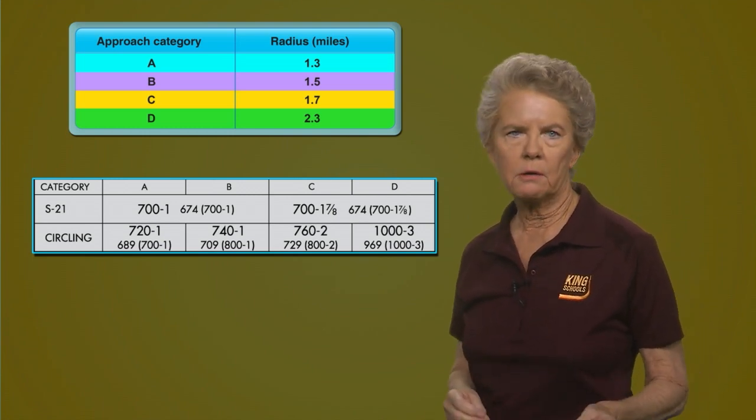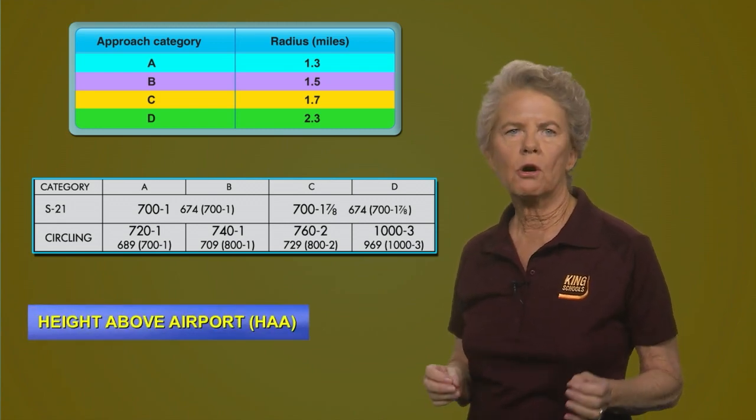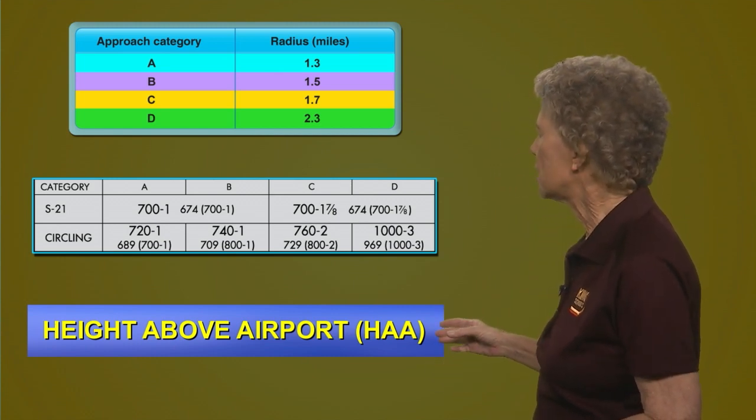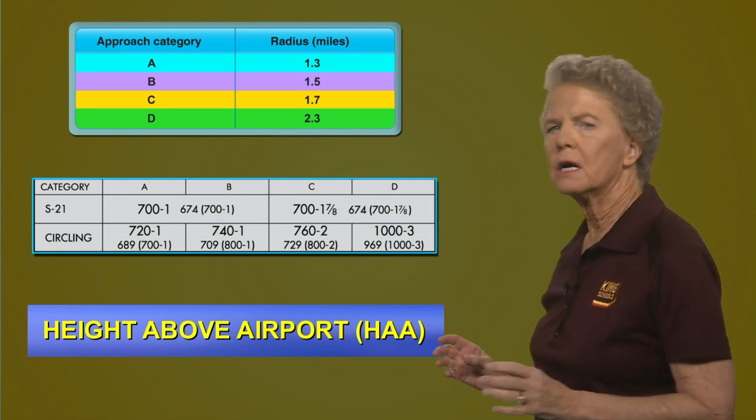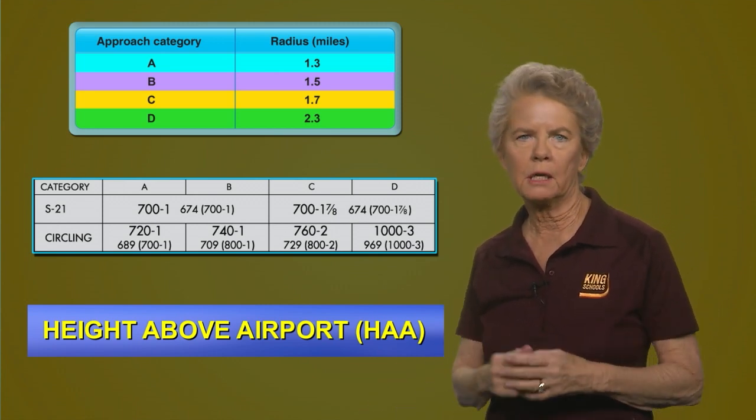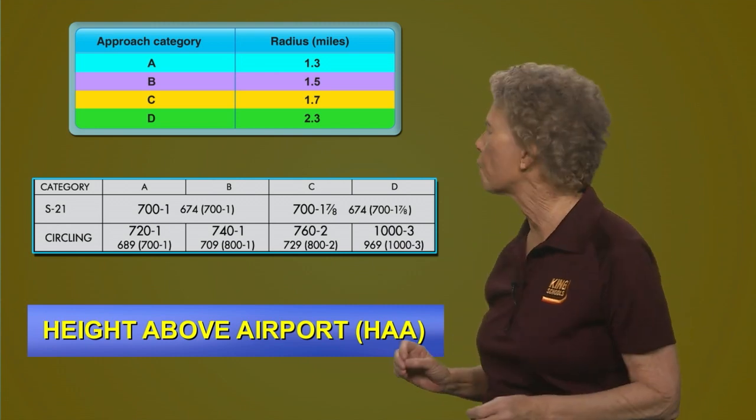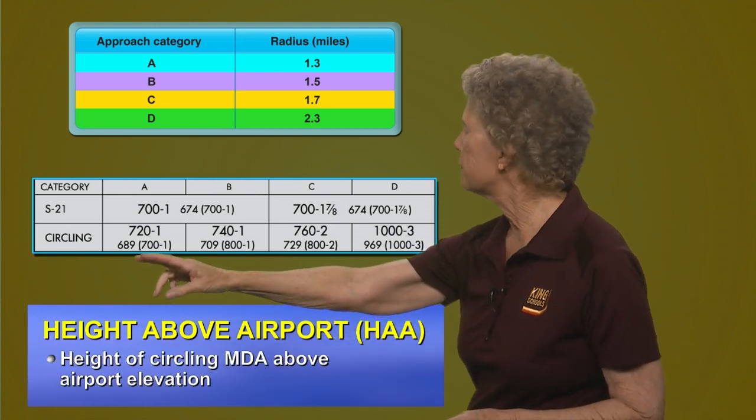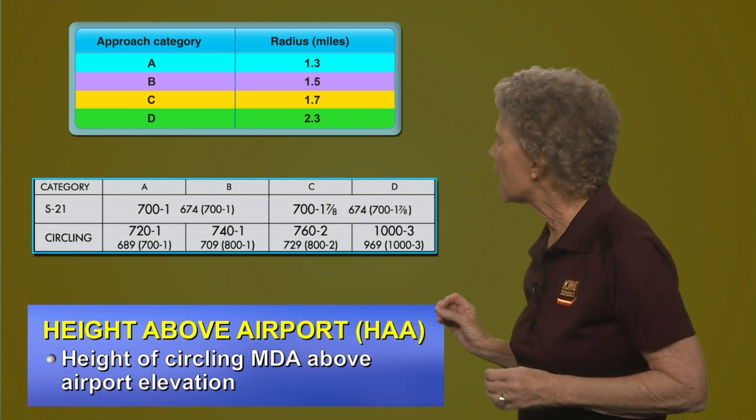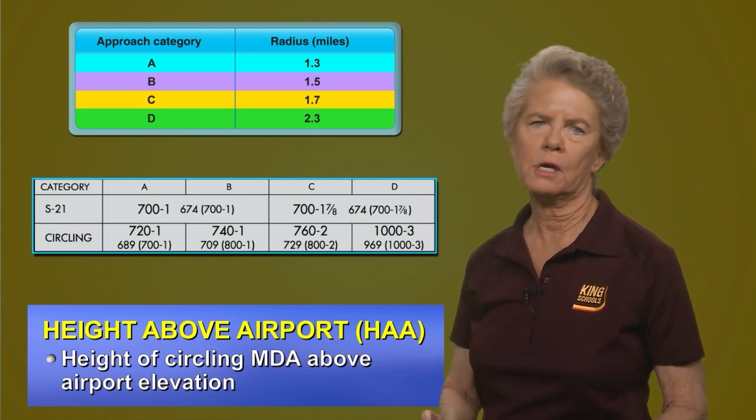Now, if you're going to circle to land, your above ground level altitude has a different name. In this case, it's called a height above airport, abbreviated HAA. It's not a height above touchdown because you're not landing straight-in on the runway you're making the approach to. Because you're circling around the airport, your height above airport, HAA, is the height of the circling MDA above the airport elevation.